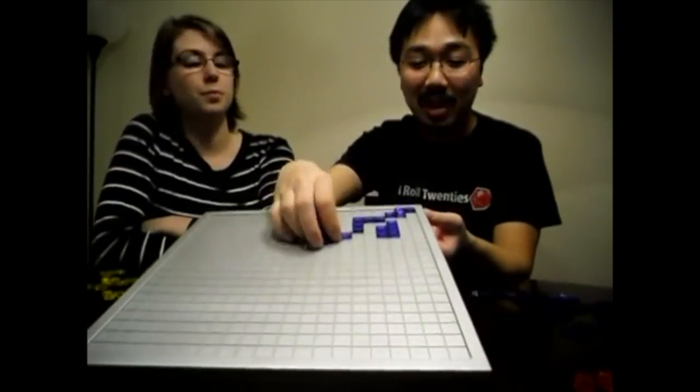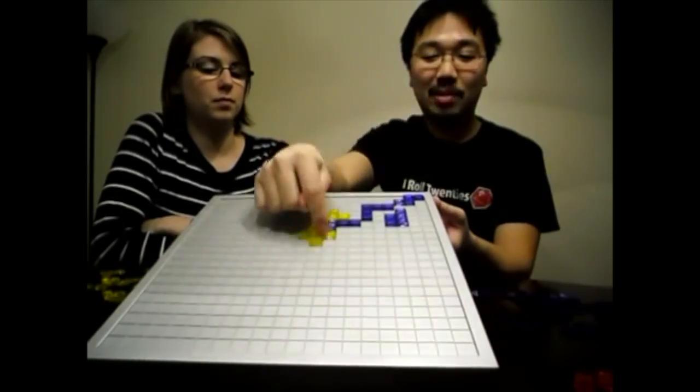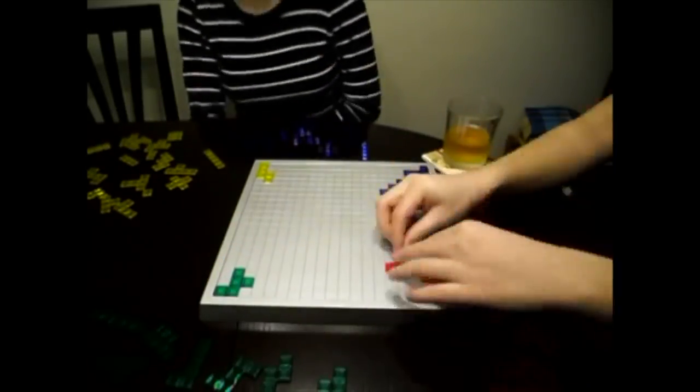Blocus is a two or four player game where players alternate laying pieces on a lattice grid. Players must start at opposite corners of the board.